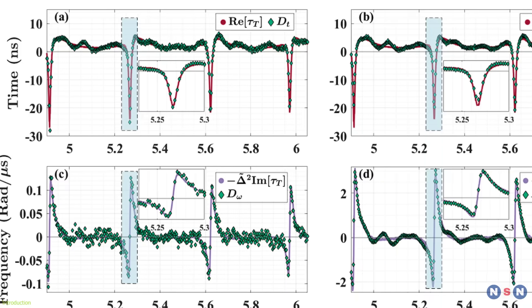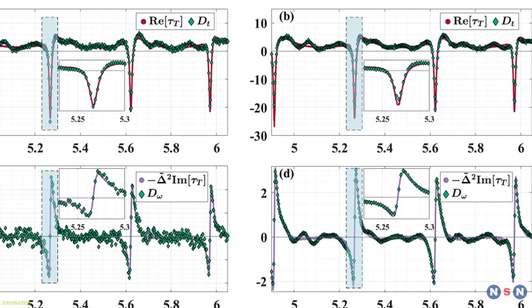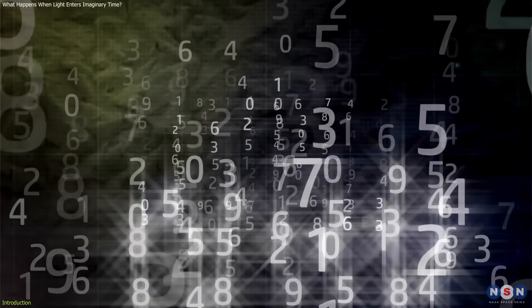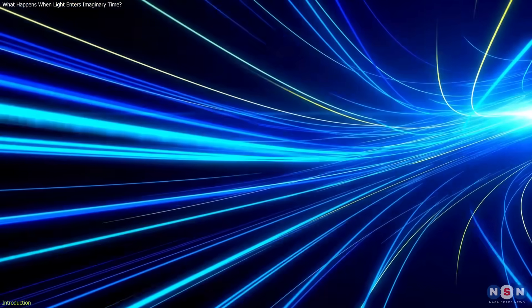They detected frequency shifts matching predictions involving imaginary numbers. Long thought to be just mathematical tools, these numbers now reveal real, measurable effects in how light travels through complex media.